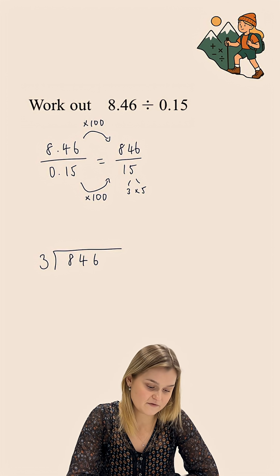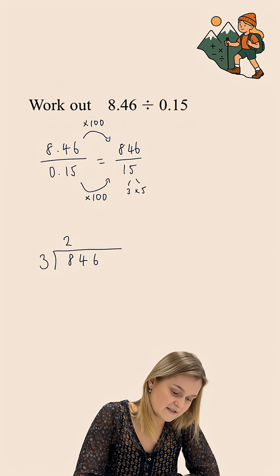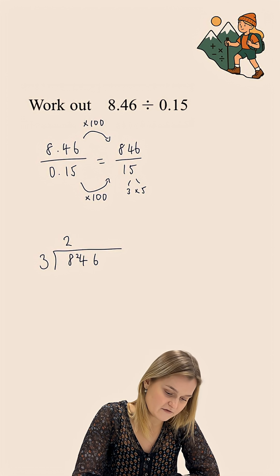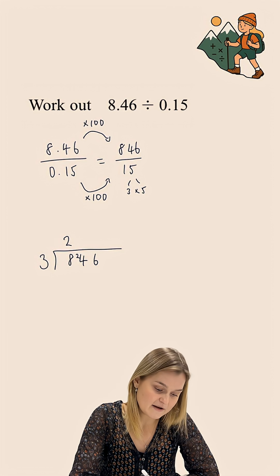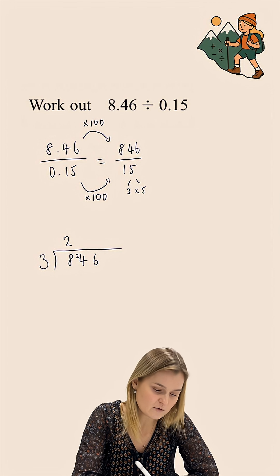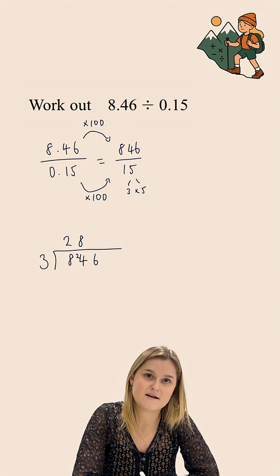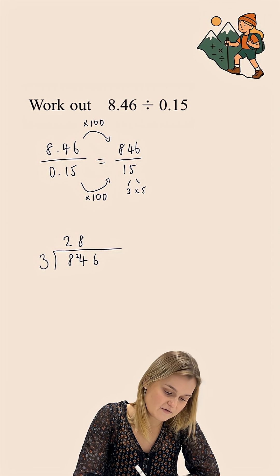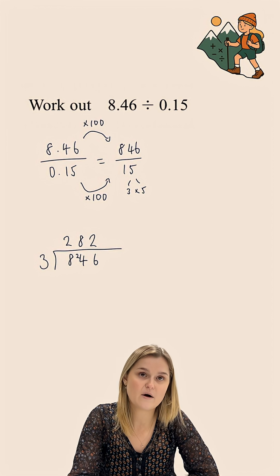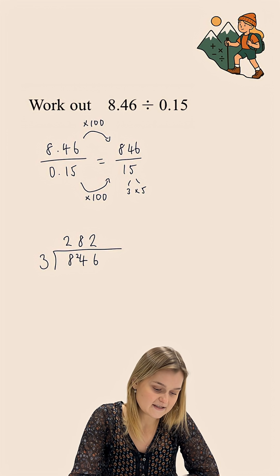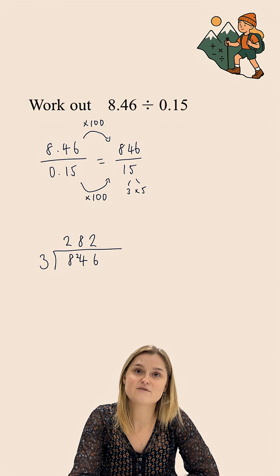How many whole groups of 3 go into 8? 3 goes into 8 twice with a remainder of 2. I'm now doing how many whole groups of 3 go into 24? That goes 8 times with no remainder. And now I'm doing how many 3's go into 6? That goes twice. So 846 divided by 3 is 282.